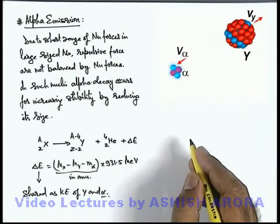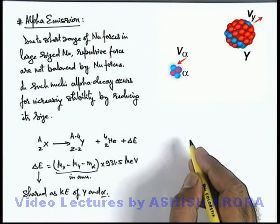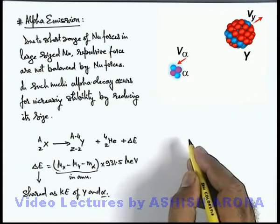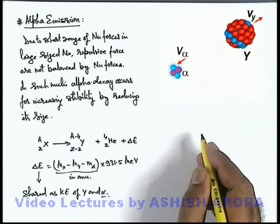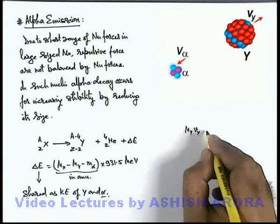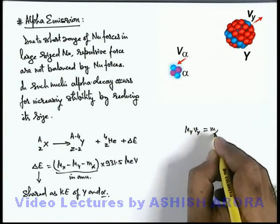Now in this reaction, what we can see here is, as initially the nucleus X was at rest, the total momentum of the system will remain zero. So here we can write M_Y V_Y, which is the recoil velocity of Y, must be equal to M_alpha V_alpha.